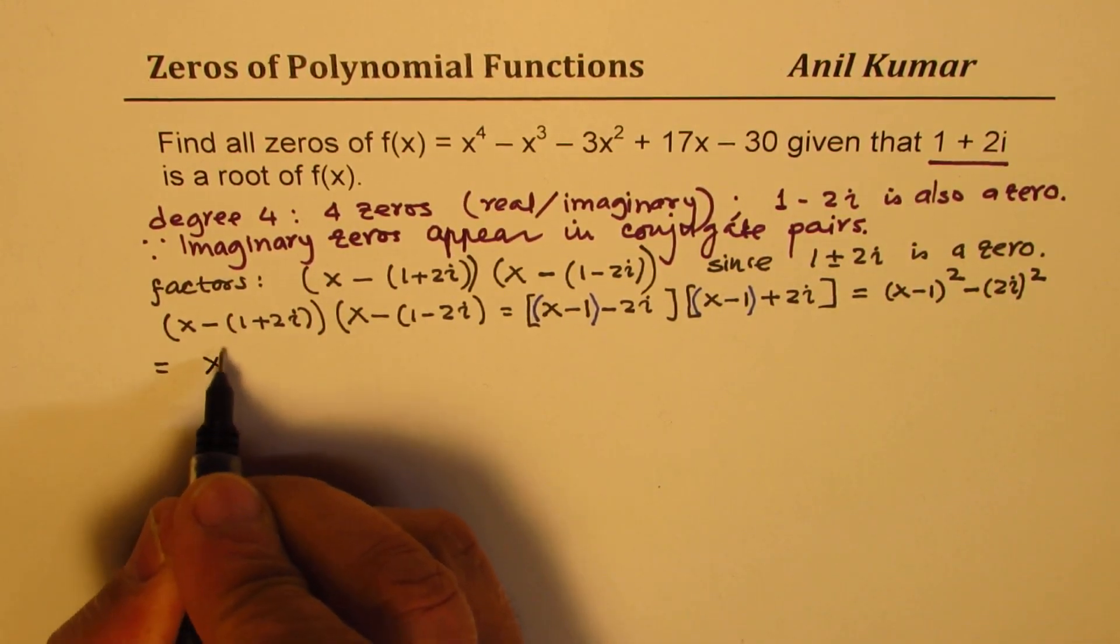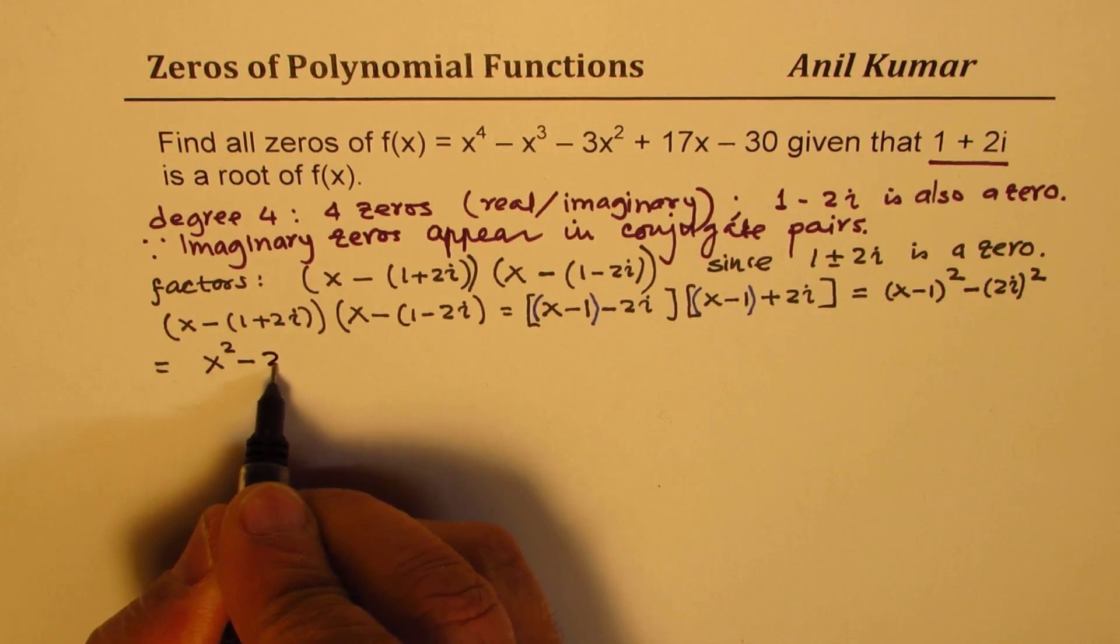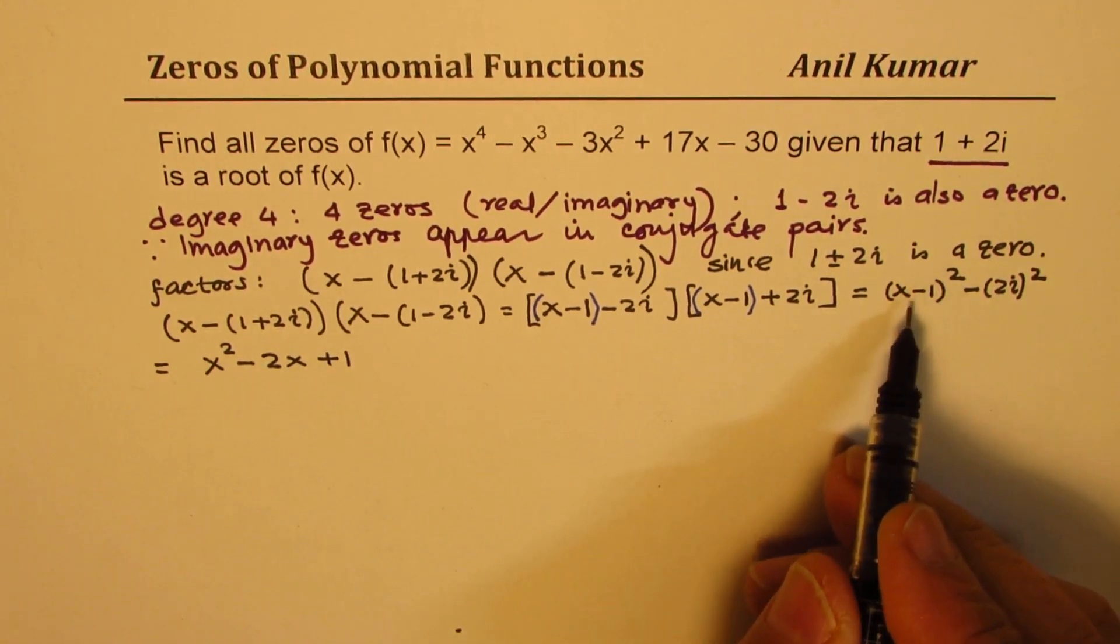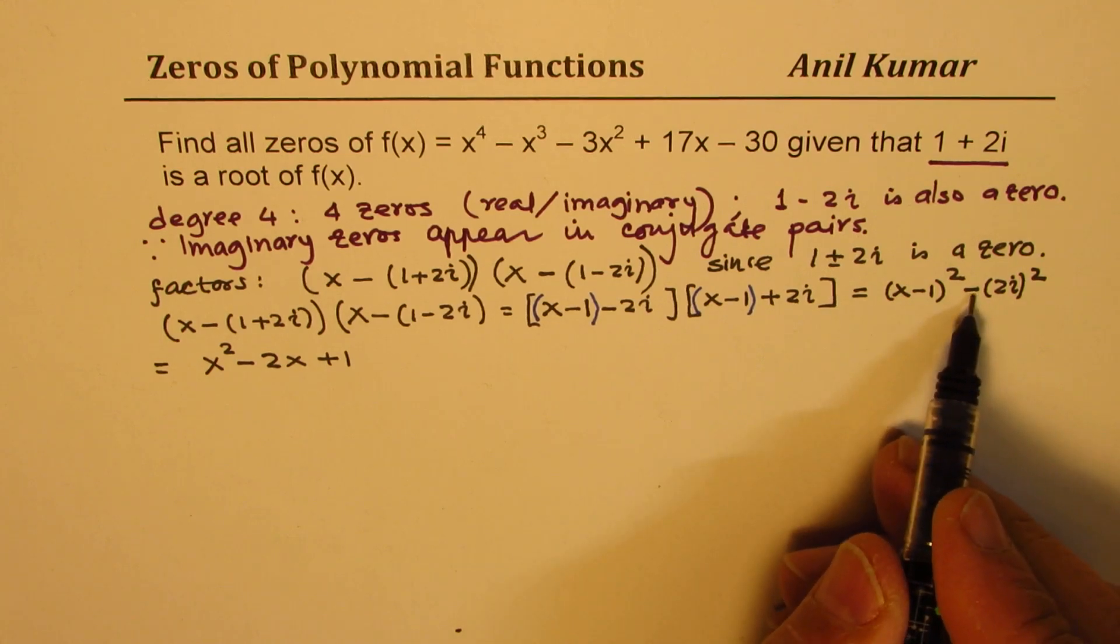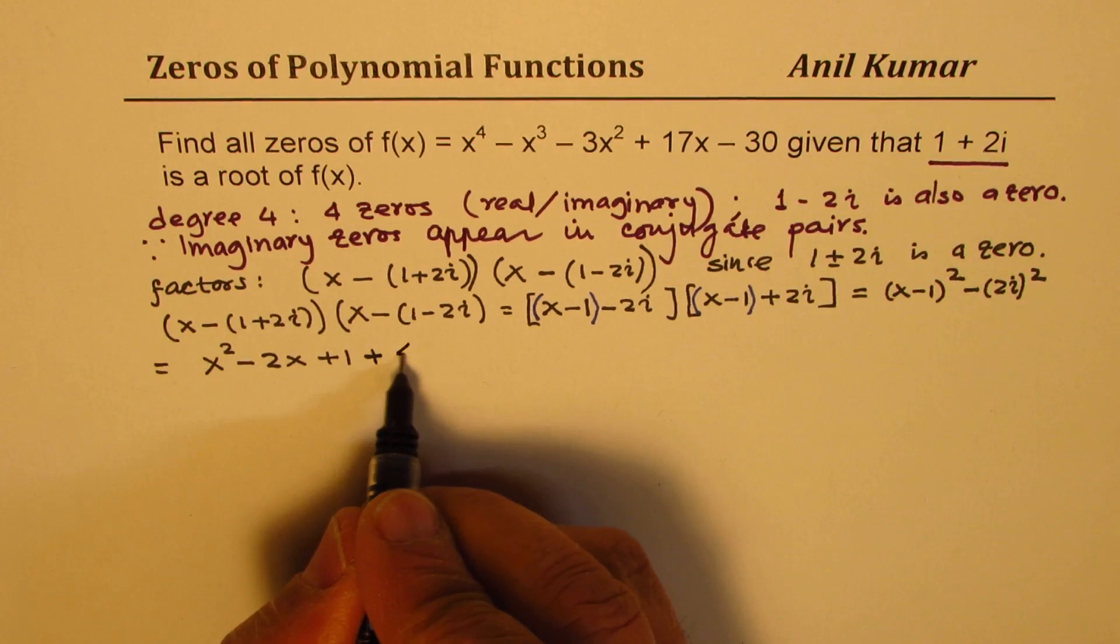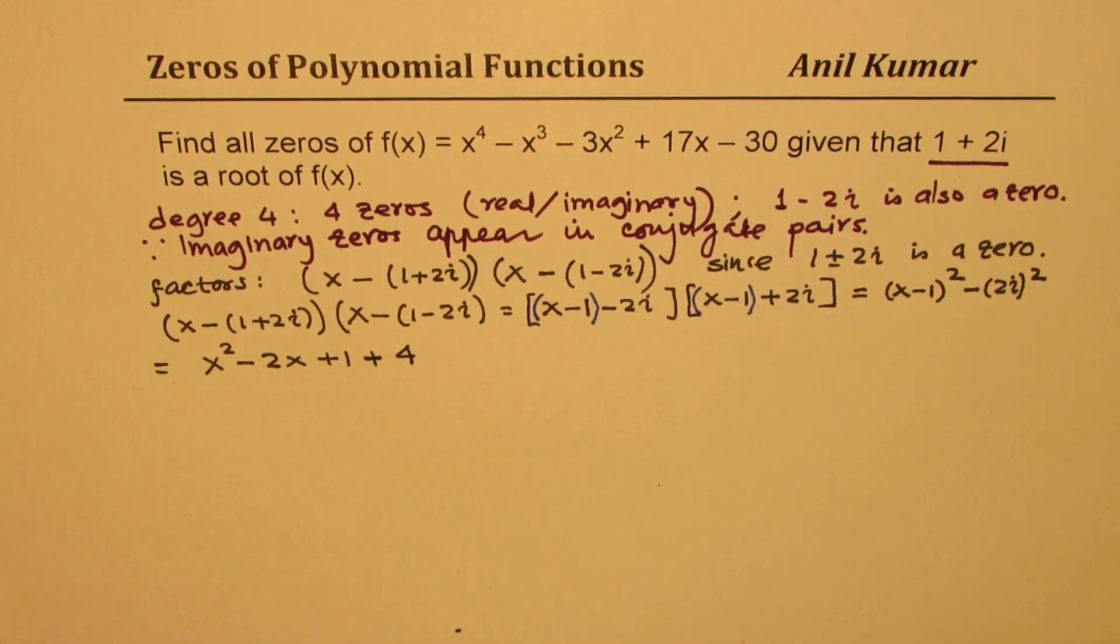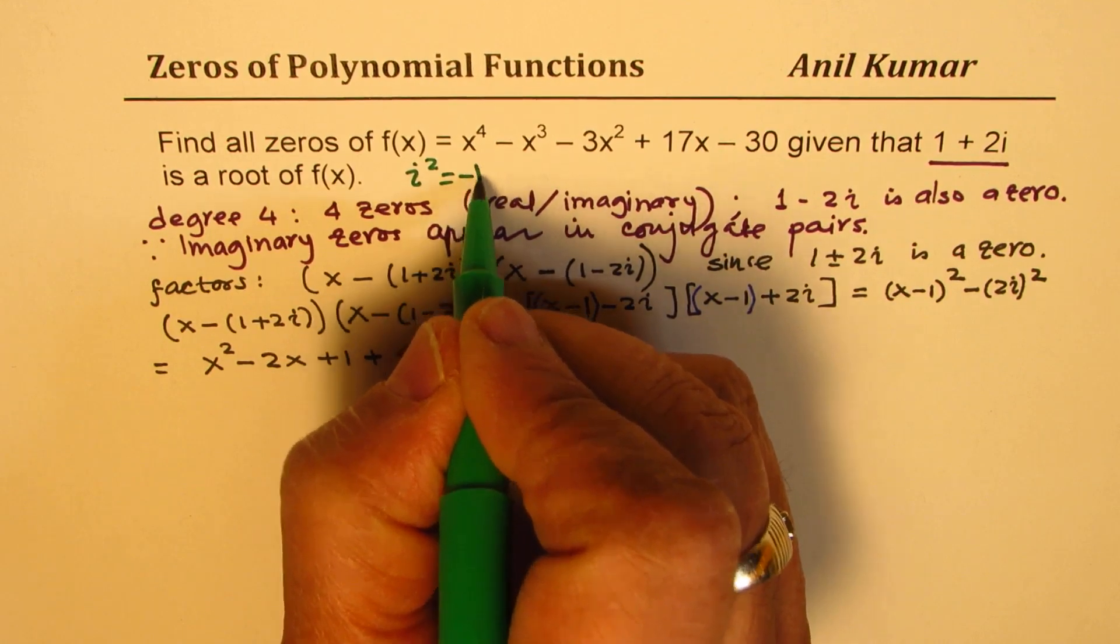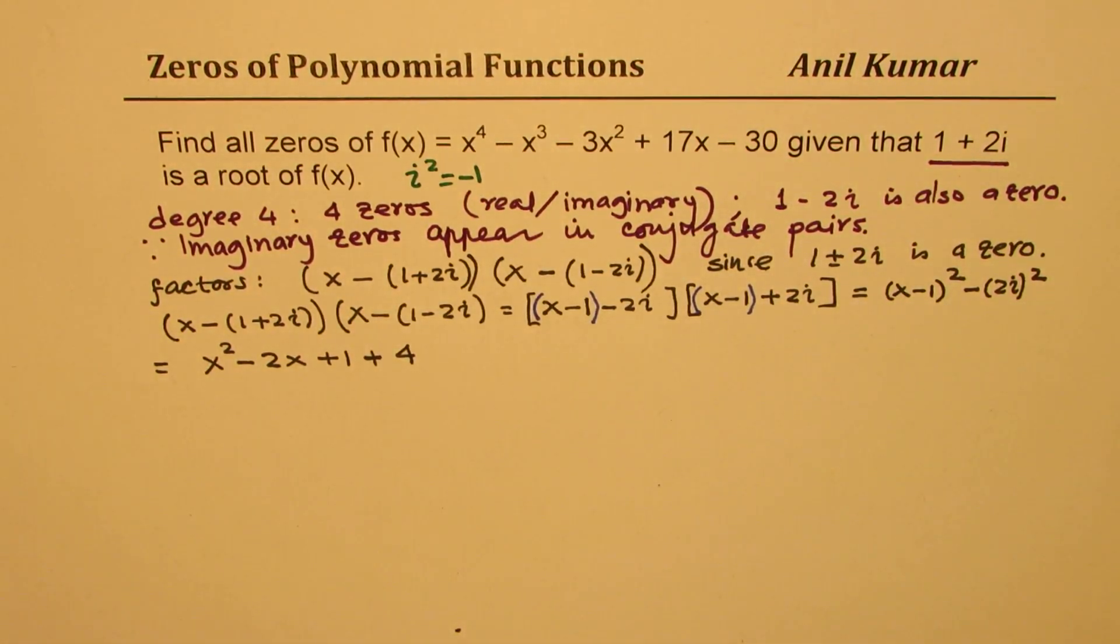I could write this as (x - 1)^2 - (2i)^2. We get x^2 - 2x + 1, this portion, the first portion, and minus (2i)^2 is plus 4. Since we know that i^2 is negative 1, correct?